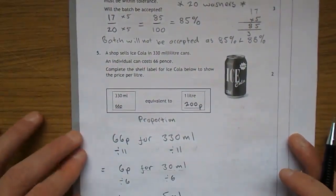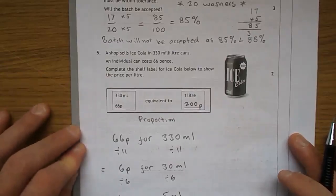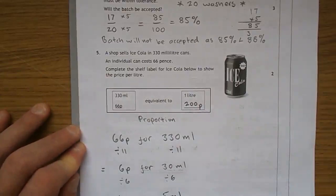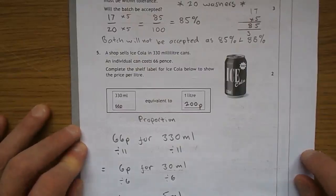The rule was 88%, so the batch will not be accepted as 85 is less than the 88% that they required. On to number 5. A shop sells ice cola in 330 milliliter cans, individual cans cost 66 pence. Complete the shelf label for ice cola below to show the price per litre.